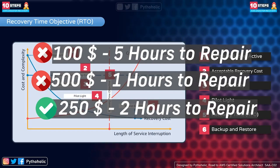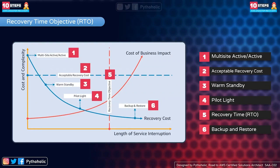The deciding factor was both cost and time, considered together against my business outcome. I can afford $250 and wait two hours — that's the maximum acceptable delay between interruption and restoration of service. This maps to the graph: the x-axis is the length of service interruption, the y-axis is cost and complexity, and this is the cost of business impact. Each disaster recovery strategy falls into one of these categories.